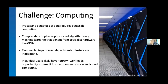Petabytes of data implies petabytes of computing. Complex data implies complex computing — things like machine learning that benefit from specialist hardware like GPUs. Your laptop or departmental cluster will just give up. And your individual workload is probably bursty — you want to spool up a big compute job today, then spend three months writing your paper. Provisioning lots of small clusters is inefficient because they'll be highly used some days and idle others. The more we can centralize and benefit from economies of scale, the more we can smooth over those bursts.